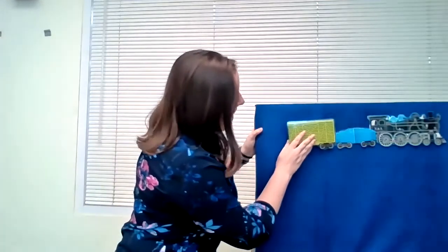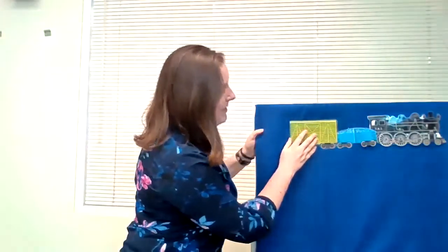All right, and now we'll add our green train car to our train. And we have our last one. This is the caboose, which is the very end of the train. What color is this caboose? It's red. Great job.